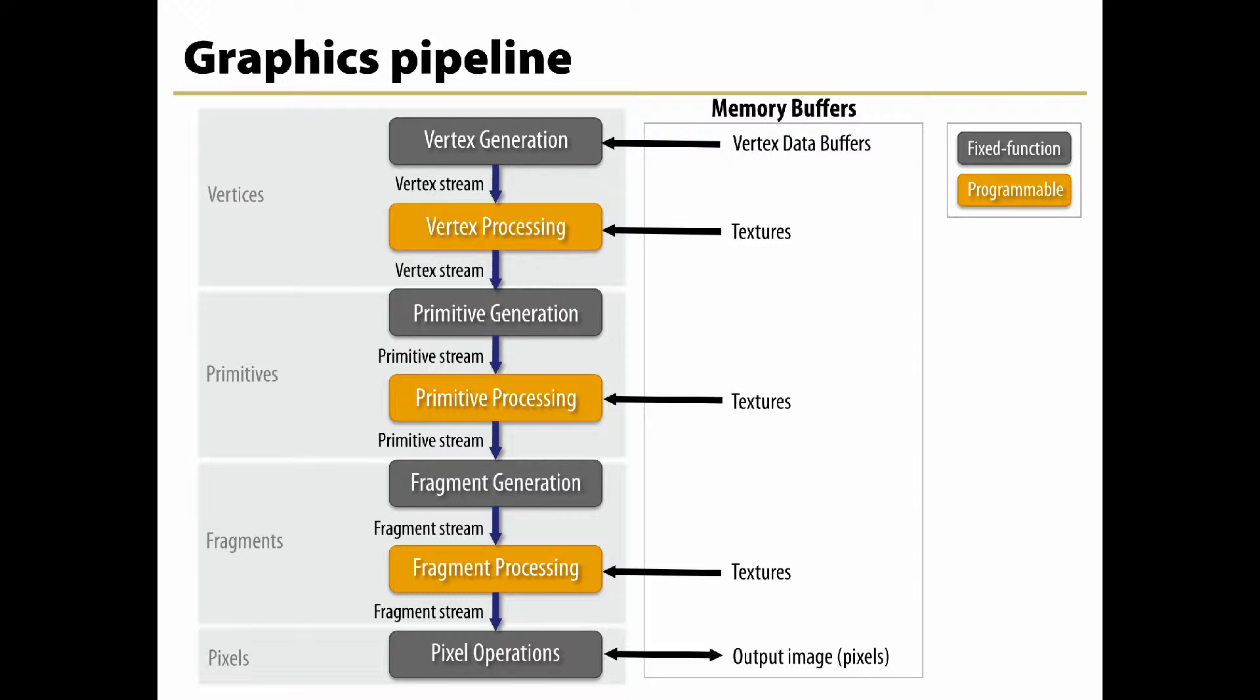Once transformed and lit, the vertices undergo clipping and rasterization resulting in fragments. A second custom shader program can then be run on each fragment before the final pixel values are output to the frame buffer for display.